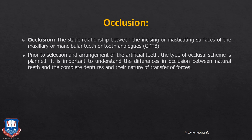Coming to the introduction: occlusion is a static relationship between the incising or masticating surfaces of the maxillary and mandibular teeth or their tooth analogs, that is artificial teeth. Occlusion is basically the relationship between the occlusal or occluding surfaces of the teeth. Prior to the selection of artificial teeth, the type of occlusal scheme is planned — whether we are going to go for a balanced occlusion, a lingualized occlusion, a monoplane occlusion, or no balanced occlusion at all.